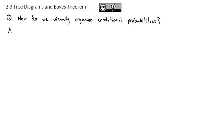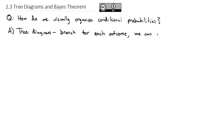The best way to organize a conditional probability is using what is called a tree diagram. A tree diagram basically has a branch for each outcome, and then each branch produces a conditional outcome from that outcome. To find final probabilities, we can multiply down the branches.